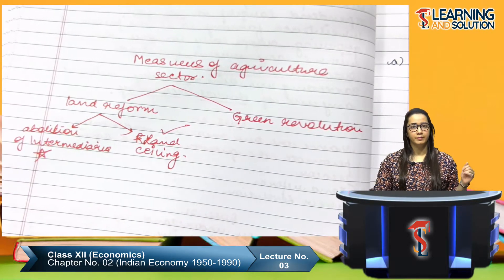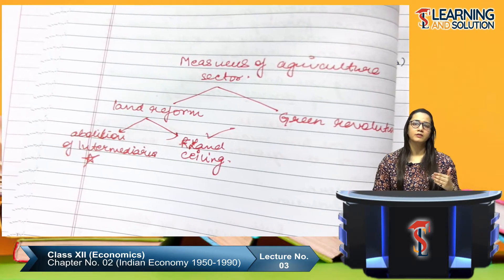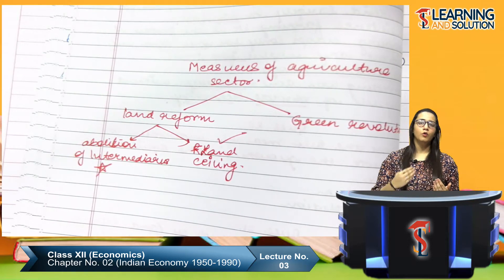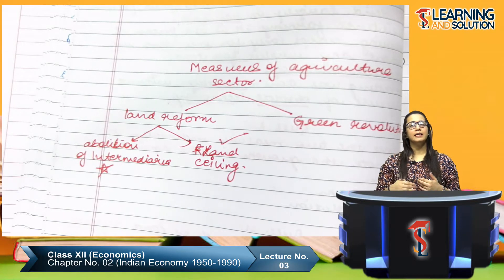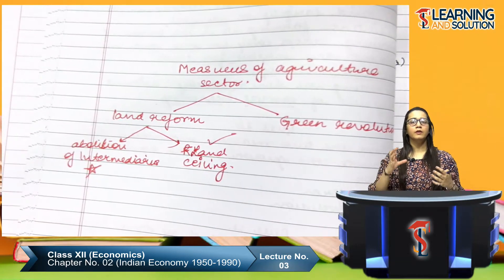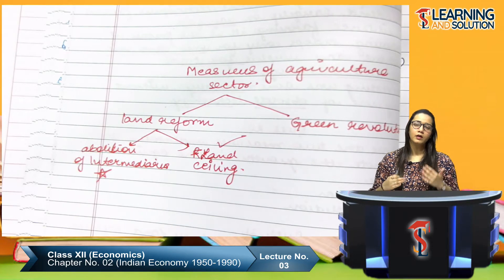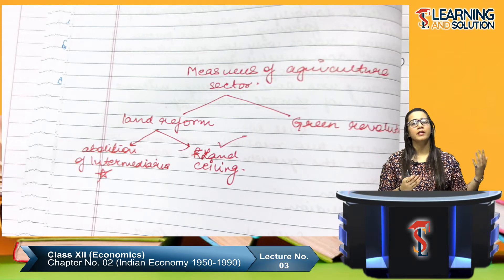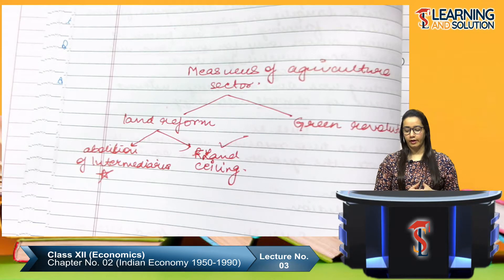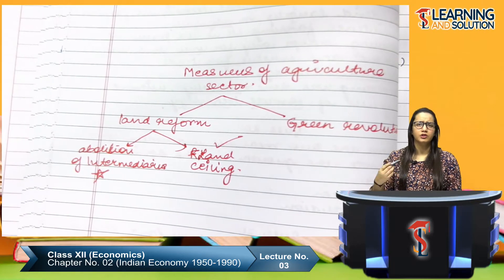In land reform, there was abolition of intermediaries and land ceiling. Intermediaries and landowners were abolished and it was declared that whoever is the cultivator of the land will be the owner. Then we talked about land ceiling — fixing an upper limit so that a particular individual cannot own land more than that limit. If they own more land, it goes to the government, who then provides that land to landless laborers.